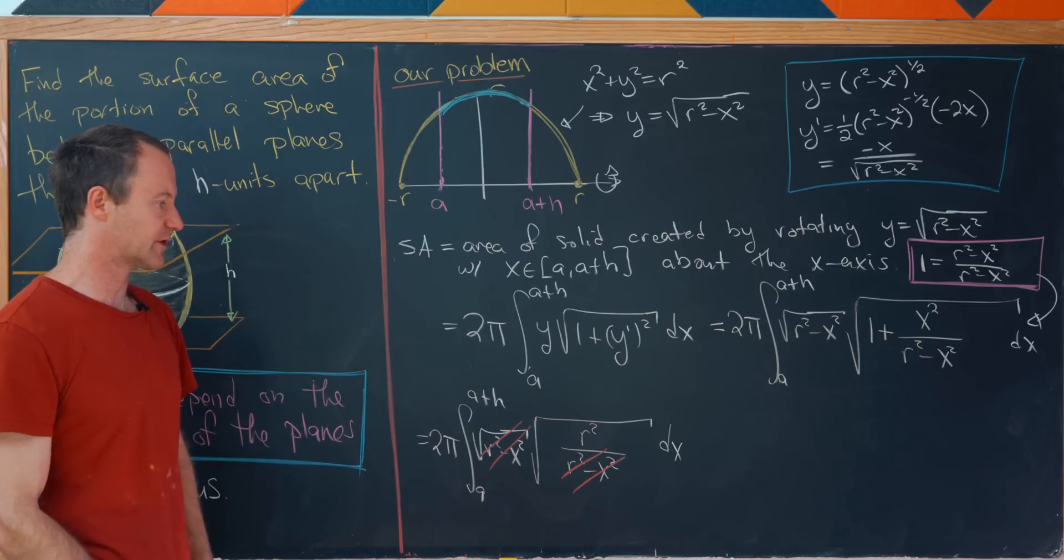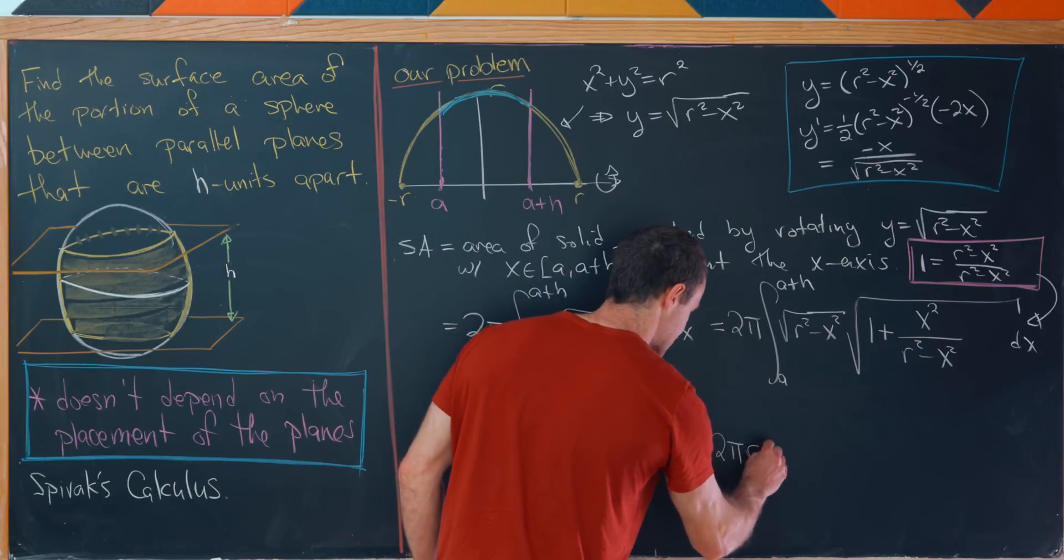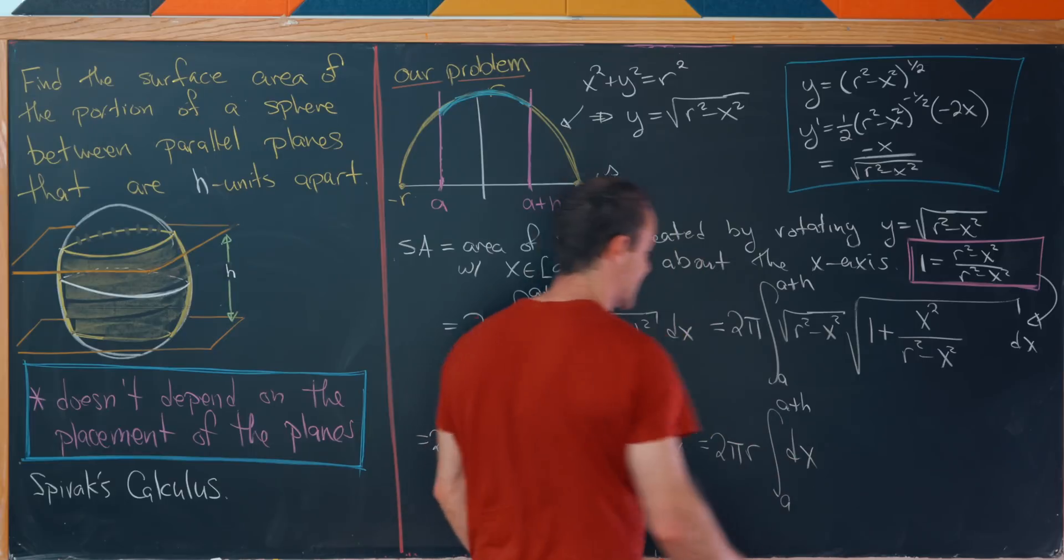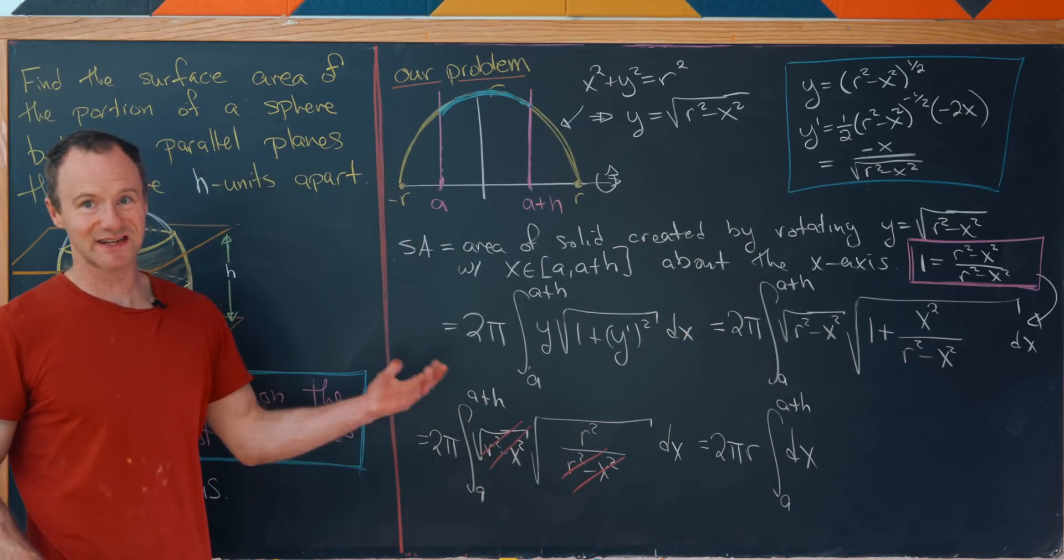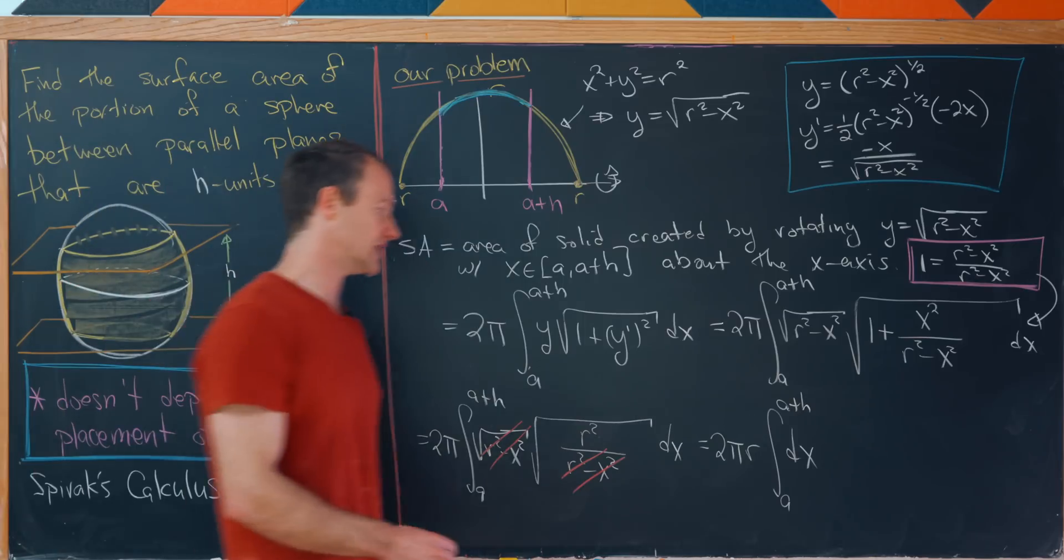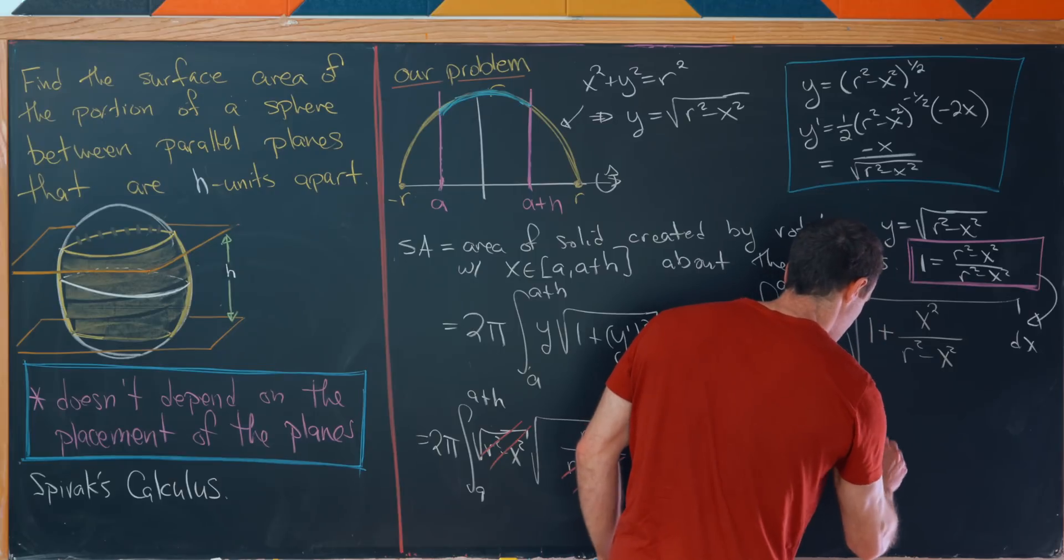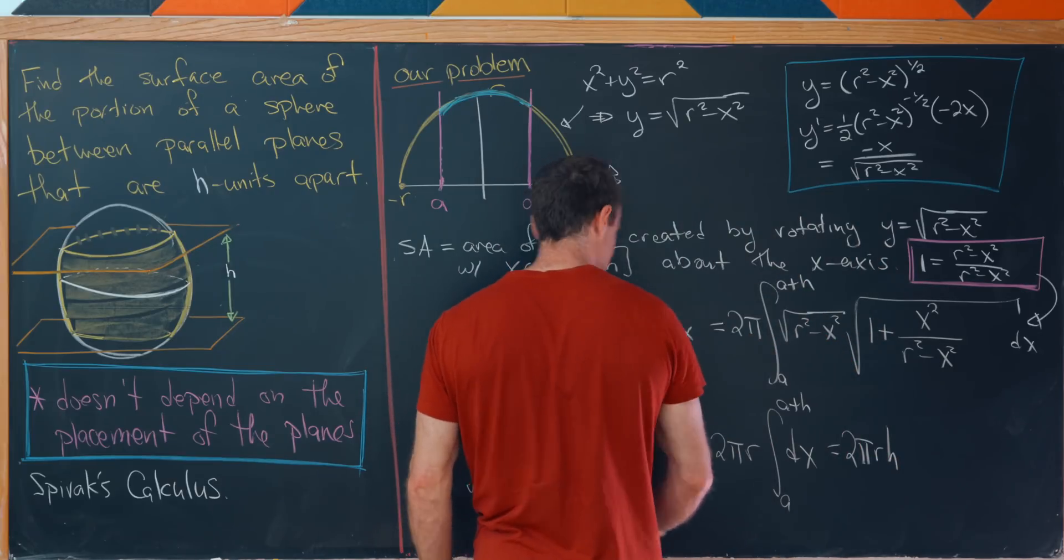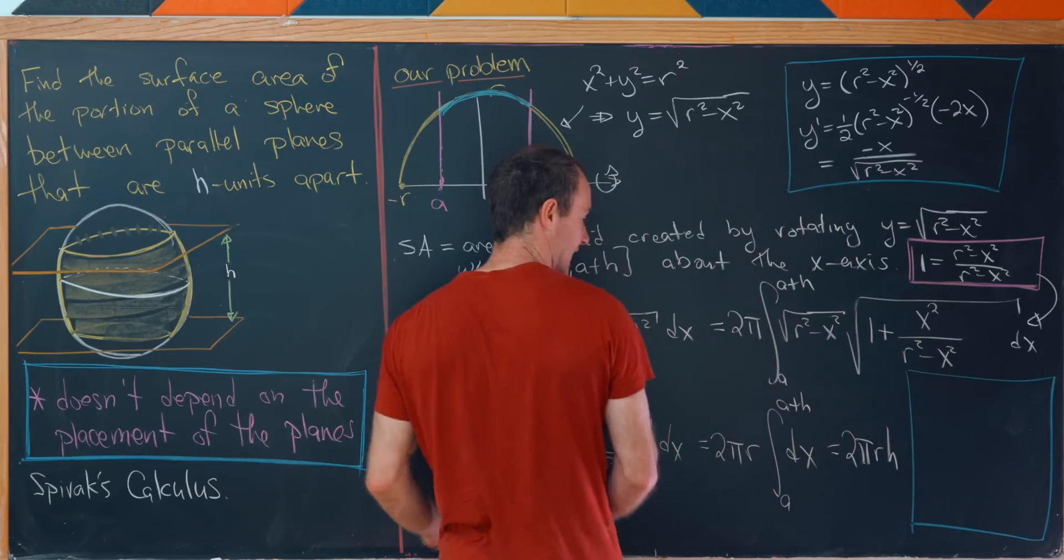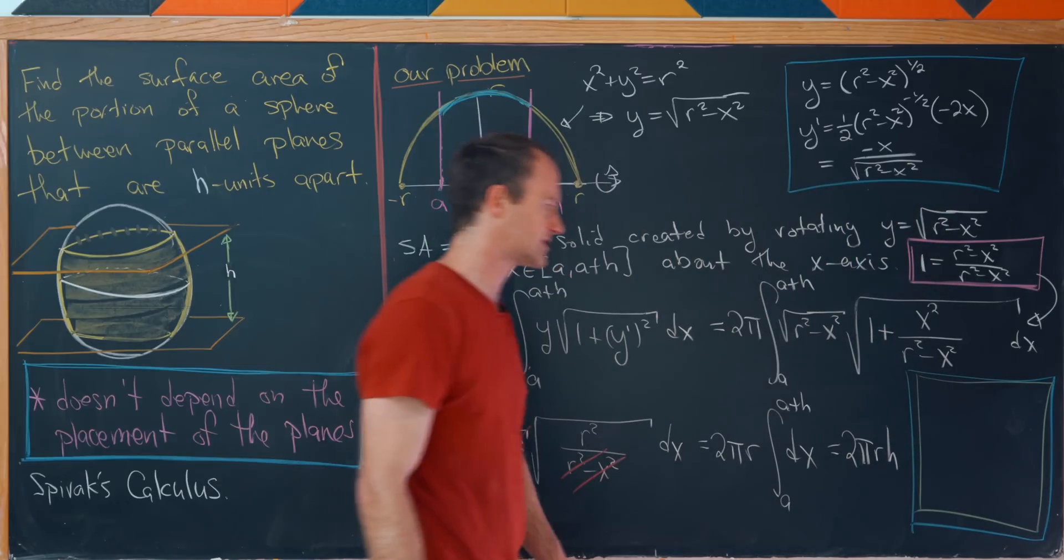Forgot my dx term. Then we're taking the square root of r squared. So that's simply r. But r is a constant with respect to the integral. So we can take it out, leaving us with 2 pi times r. And then the integral from a to a plus h of dx. But that's just going to deposit us the length of the interval. But the length of the interval is h. So that gives us our final answer, 2 pi r h.